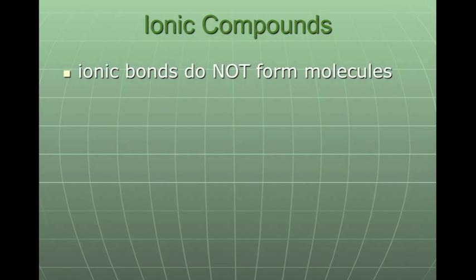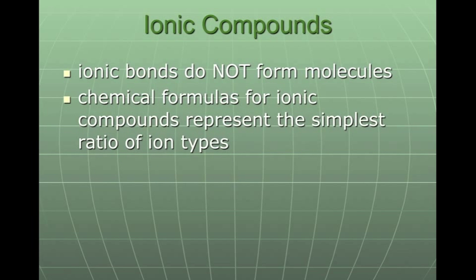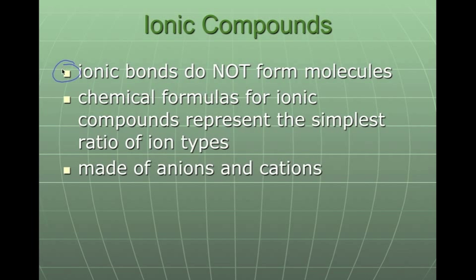Ionic compounds are basically just metals and non-metals forming together. Specifically, ionic bonds do not form molecules. We remember from the previous video that molecules are specific to covalent compounds.